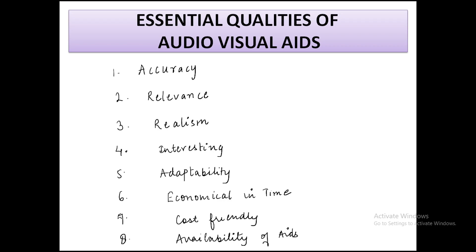Now, what are the essential qualities of audio-visual aids? First, the right type of audio-visual aid should be chosen for explaining a topic — it is not at all proper to choose a science model for teaching commerce. There should be accuracy: aids should be selected according to what is taught, meaning it should be appropriate to the subject. Relevance is also very important — for example, a human heart should be used to teach about a human heart. If a frog's heart is displayed assuming all hearts function similarly, it amounts to erroneous teaching.